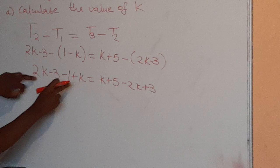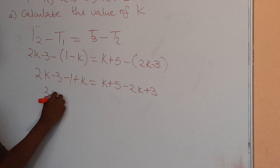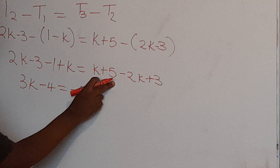From here we'll group the like terms. 2k plus k is 3k, minus 3 minus 1 is minus 4. k minus 2k is minus k, 5 plus 3 is 8.